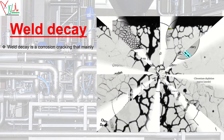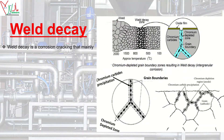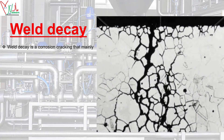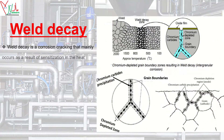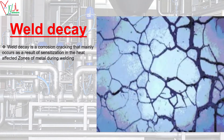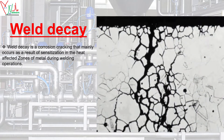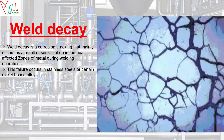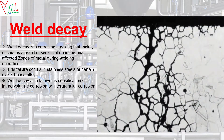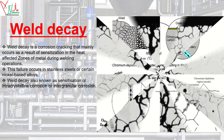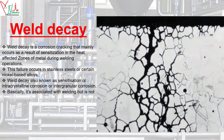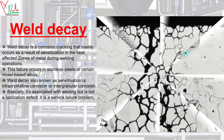This video explains the weld decay phenomenon associated with stainless steel. Weld decay is a corrosion cracking that mainly occurs as a result of sensitization in the heat-affected zones of metal during welding operations. This failure occurs in stainless steels or certain nickel-based alloys. Weld decay, also known as sensitization, intracrystalline corrosion, or intergranular corrosion, is associated with welding but is not a fabrication defect — it is a service failure problem caused by corrosion.